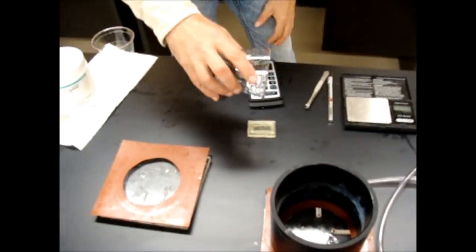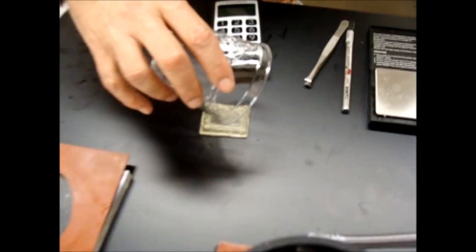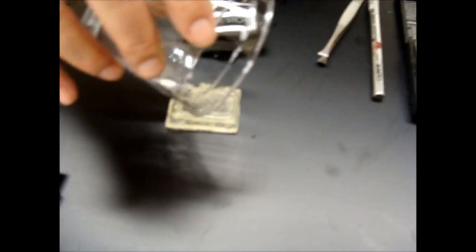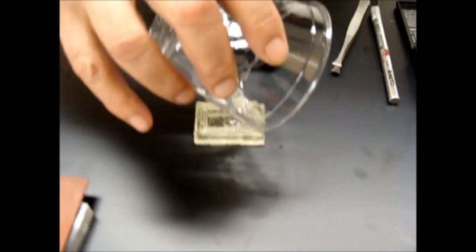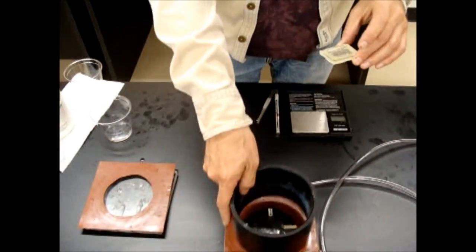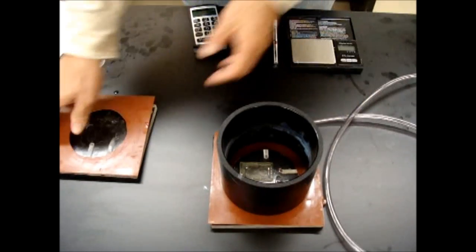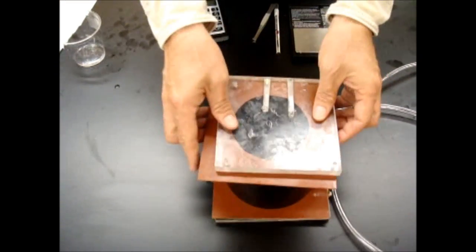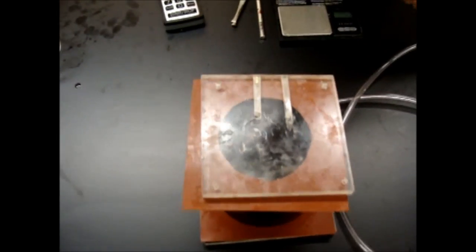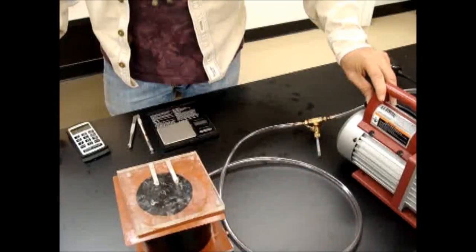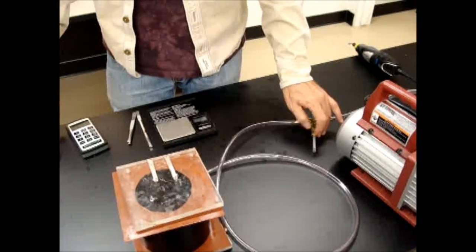Now we're going to pour this onto our epoxy mold. Now we're going to vacuum it a second time. Place it in the chamber. That should be good enough.